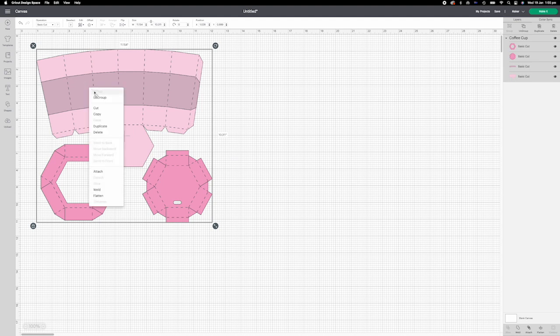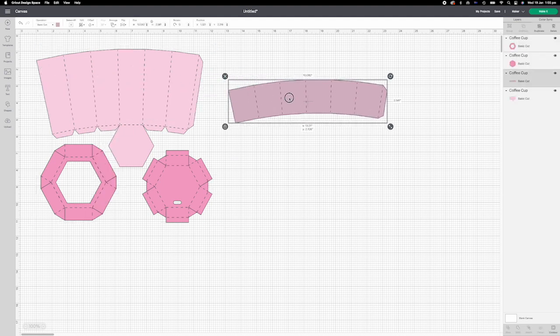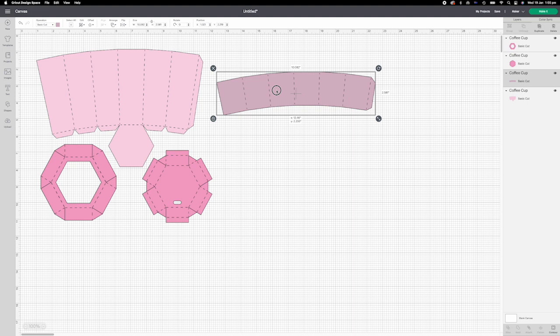I am going to ungroup it to show all the elements. This is the sleeve to help hold a hot coffee cup. This part is the coffee cup body. The bottom two pieces are for the lid. Nothing needs to be done here. Just click make it to cut.